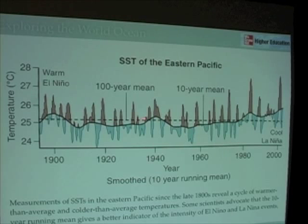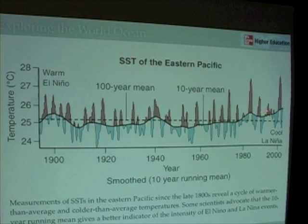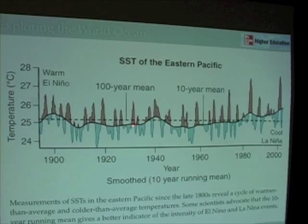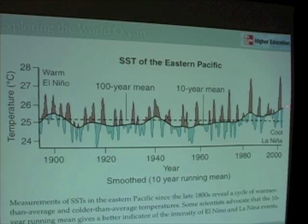If you just look at this straight line here, this is the 100-year average. But as I said previously, some scientists, including George Philander, think it may be better to use the 10-year average. So you take an average of 10 years, move up a year, take an average of the next 10 years — a moving average is a more accurate, or at least a better, way of assessing the intensity of El Niños at one particular time.